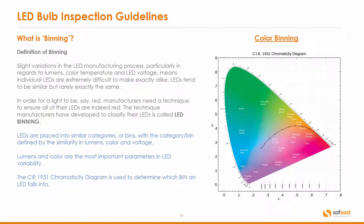So what is binning? Slight variations in the LED manufacturing process, particularly in regards to lumens, color temperature, and LED voltage, means individual LEDs are extremely difficult to make exactly alike. LEDs tend to be similar but rarely exactly the same. In order for a light to be, say, red, manufacturers need a technique to ensure all of their LEDs are indeed red. The technique manufacturers have developed to classify their LEDs is called LED binning. LEDs are placed into similar categories called bins, with each bin defined by similarity in lumens, color, and voltage. Lumens and color are the most important parameters in LED variability.